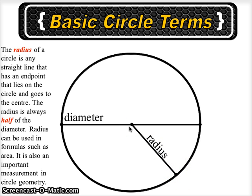The radius of a circle is any straight line that has an endpoint that lies on the circle and goes to the center. The radius is always half of the diameter.